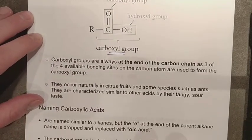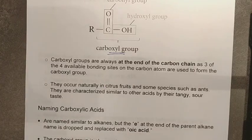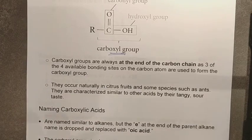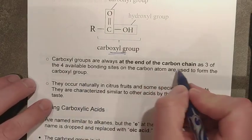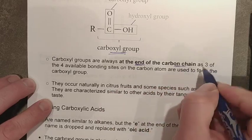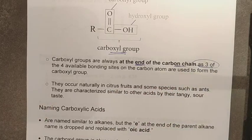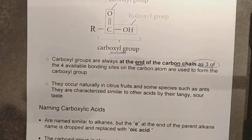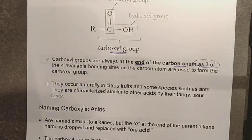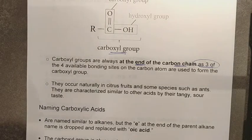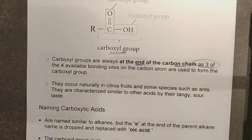When we look at carboxyl groups and carboxylic acids, we find that the carboxyl group always has to be at the end of your carbon chain because it uses three of the four available bonds. This makes it easy to recognize in structural diagrams — it will always be at the end of the structure. It is always attached to carbon-1, which is where you start numbering when naming alkyl branches or alkyl halides attached to the molecule.